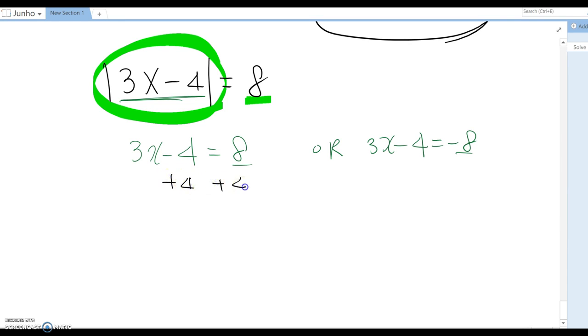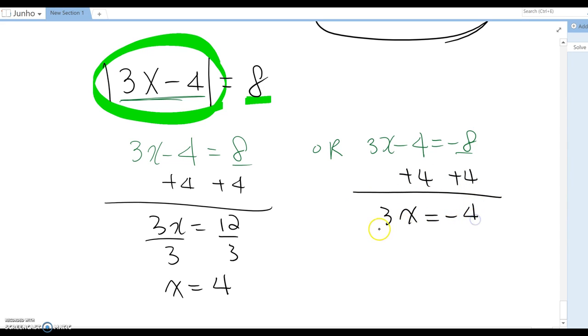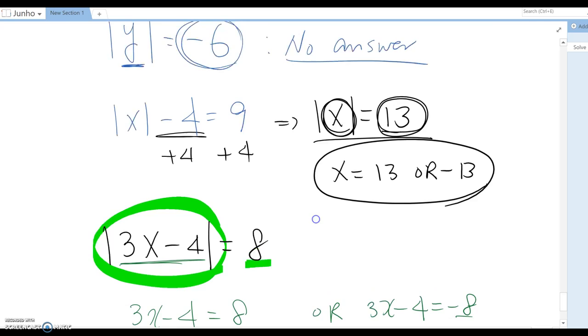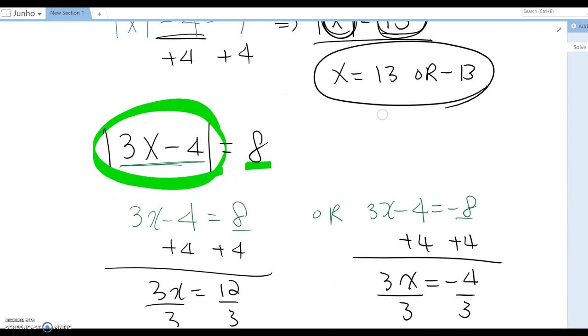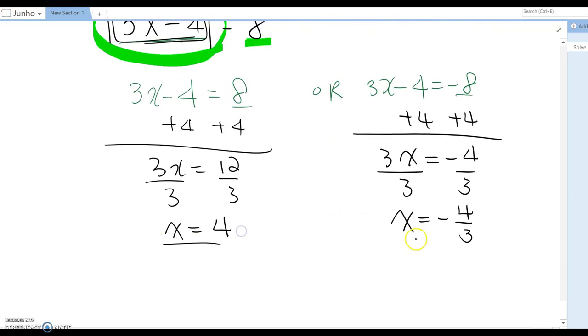From here, we solve that problem. Plus 4, then 3x equal to 12, and divide by 3, then x equal to 4. Or you combine 4 from here, then 3x equal to negative 4, and divide by 3, then x equal to negative 4 over 3. Unlike those questions, because it has many different expressions, we don't have exactly the same value with the opposite sign. It's based on the equation expression.